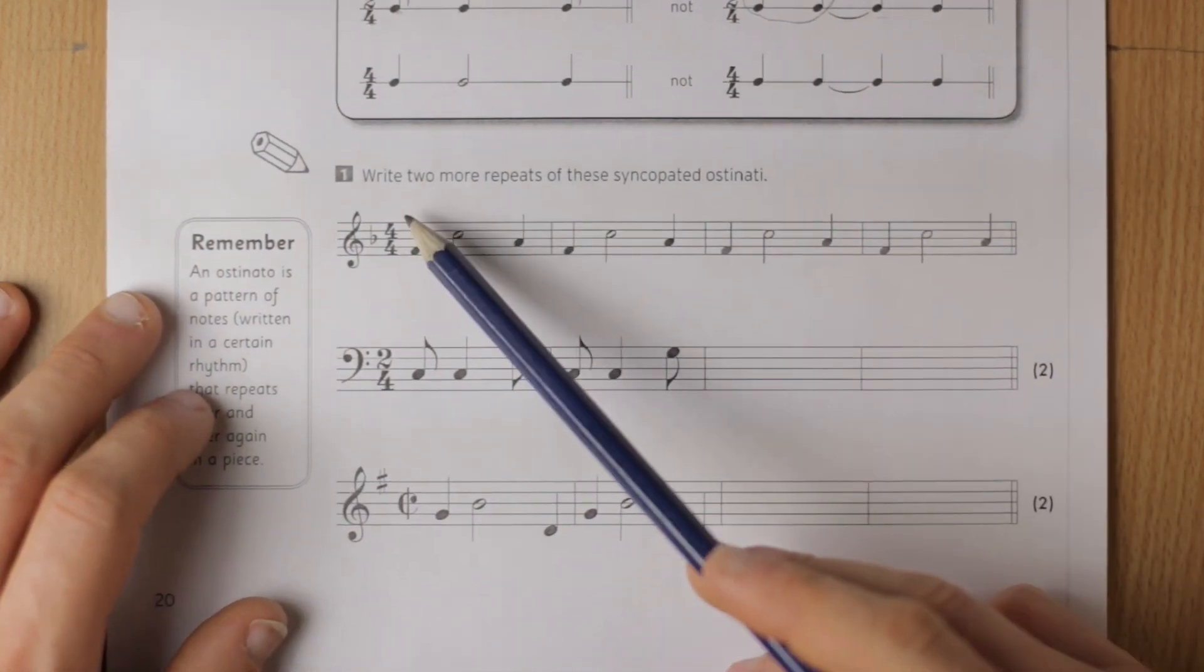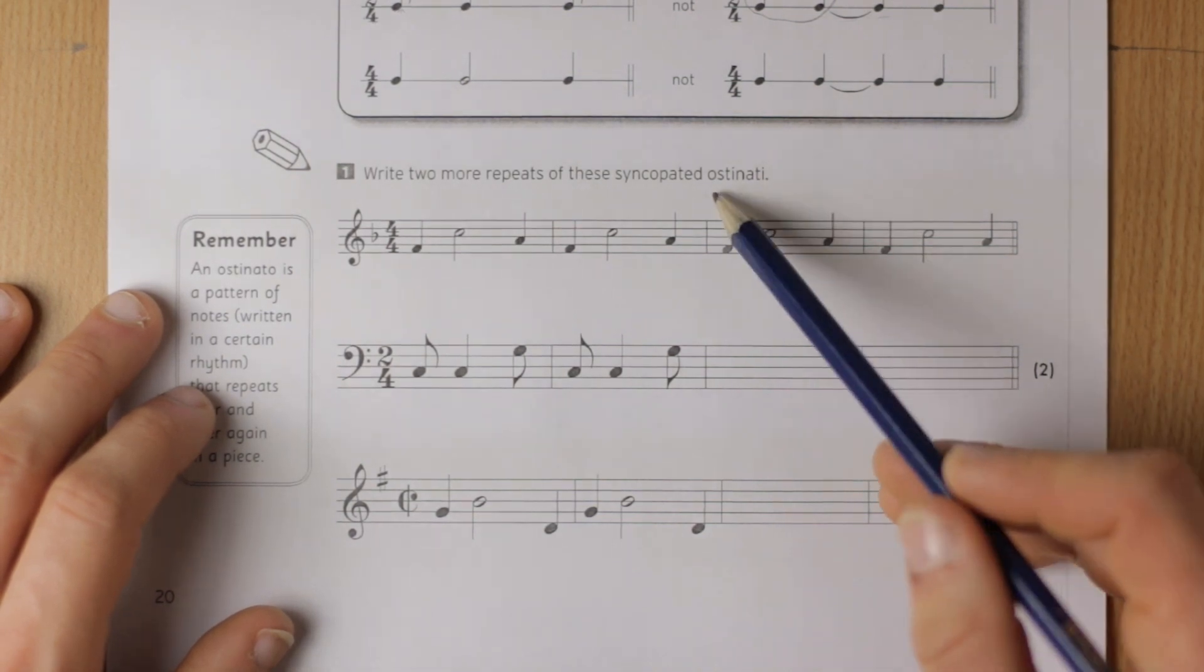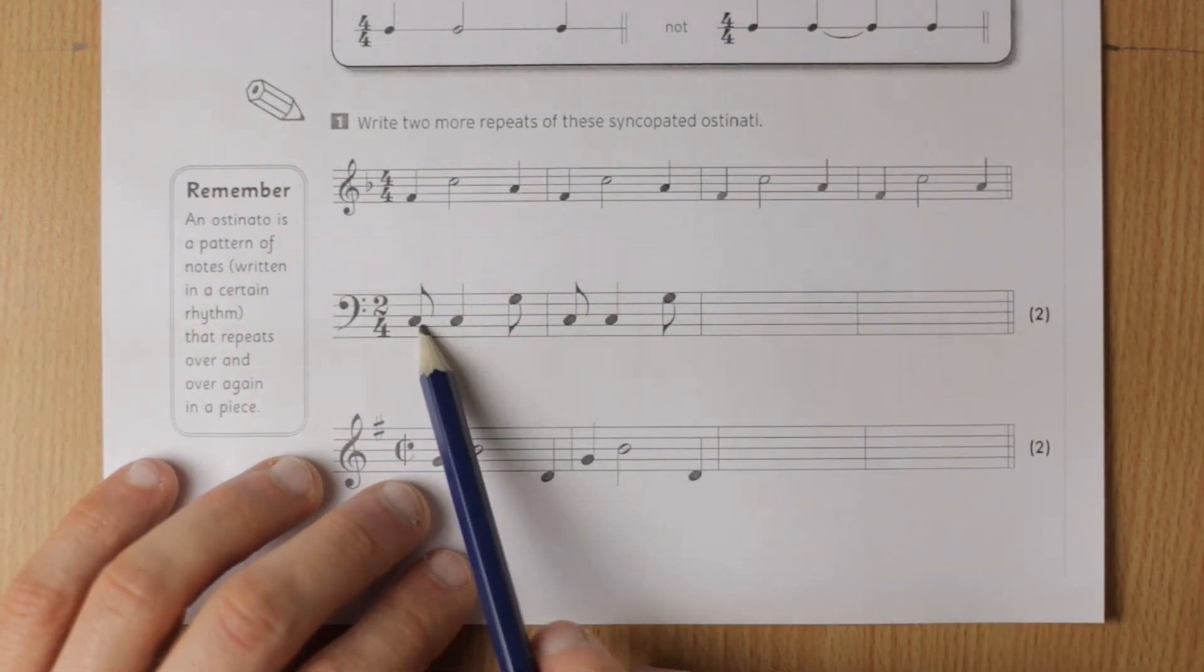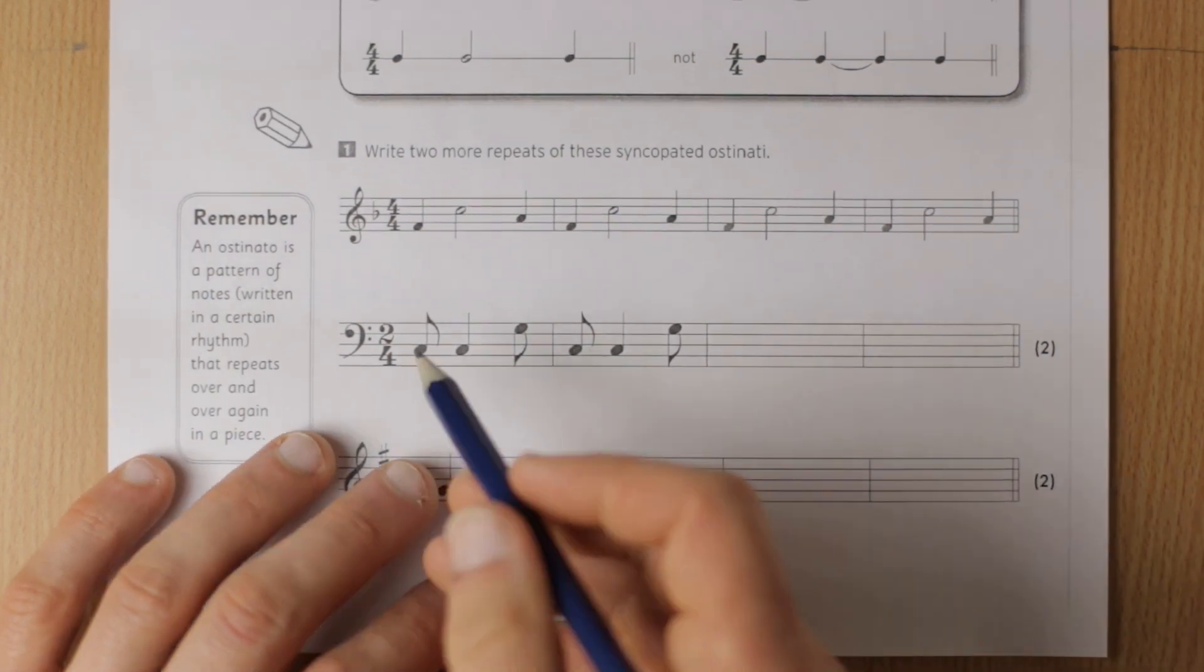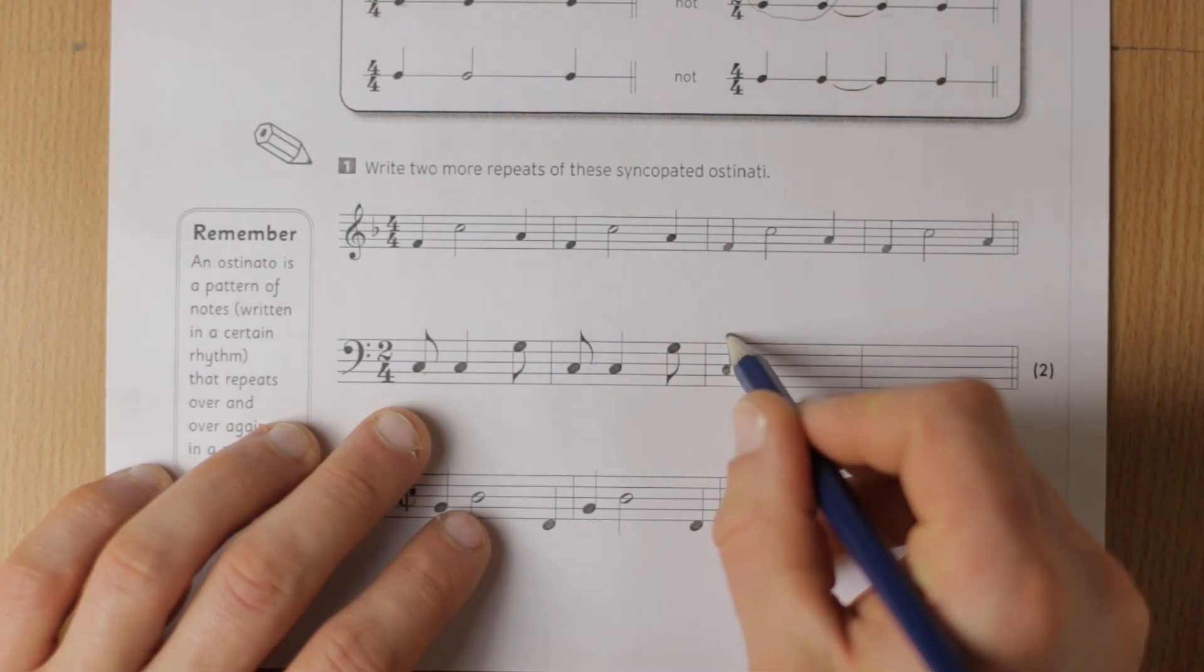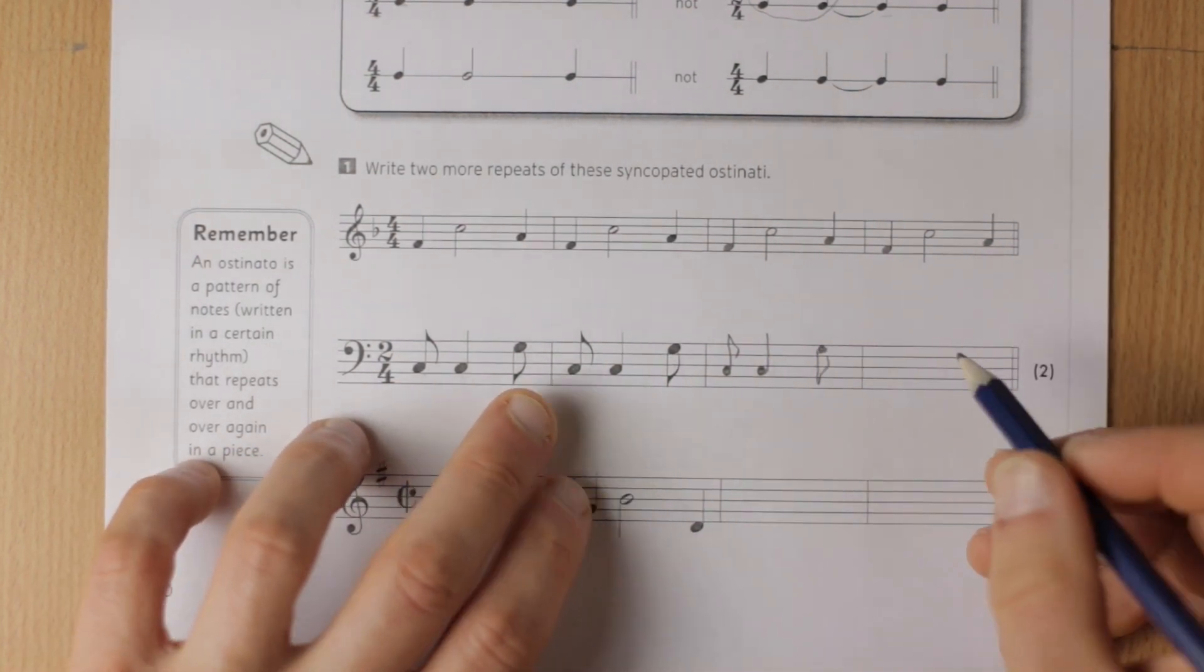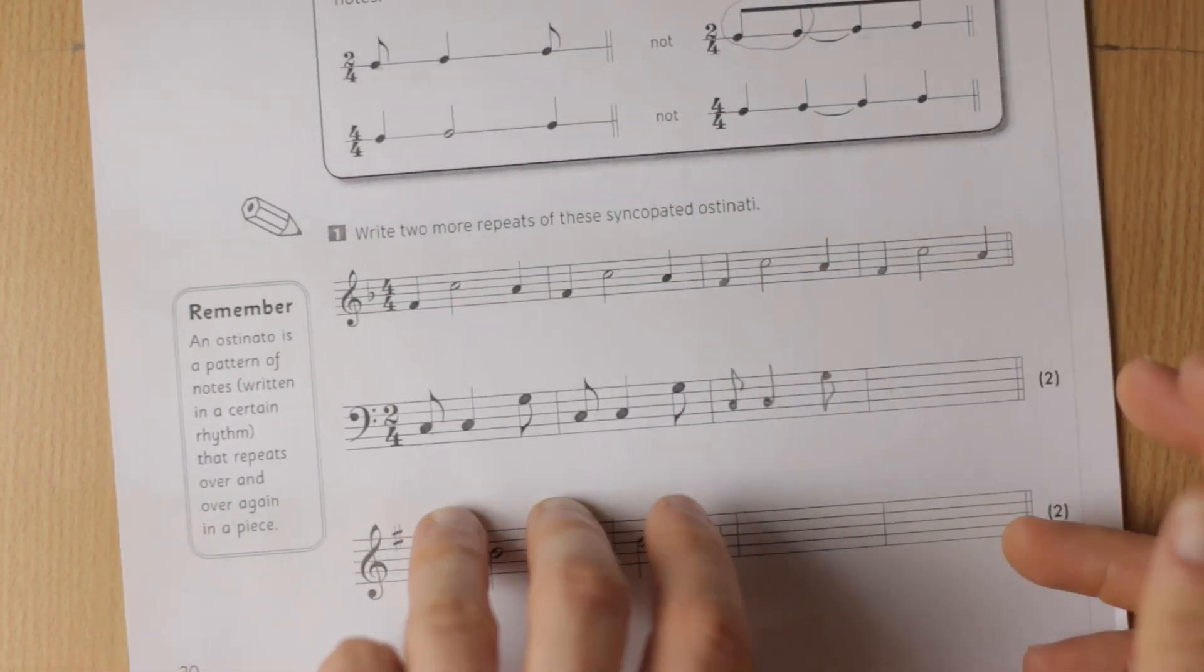Write two more repeats of these syncopated ostinati - an ostinato is a repeated pattern. So we've got this and we just copy that out. It's just getting you used to writing these syncopated rhythms. We'll start with the quaver and then the crotchet and then the quaver and that's it. Do that again. That will give you your two marks for each bar and the same here.